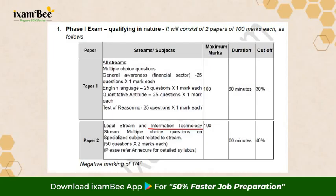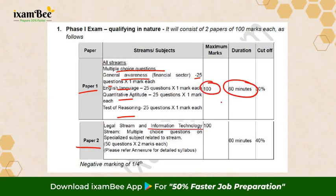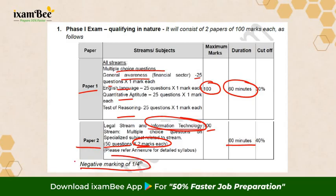Let's discuss the exam pattern of IFSCA Grade A. There will be three phases: Phase 1, Phase 2, followed by an interview. In Phase 1 there will be two papers. Paper 1 will have multiple choice questions on General Awareness, English, Quant, and Reasoning — 25 questions per section, maximum 100 marks, and 60 minutes duration. Paper 2 will be stream-specific with 50 questions of two marks each, maximum 100 marks, 60 minutes, with negative marking of one-fourth. Phase 1 is qualifying in nature.